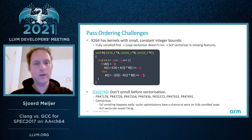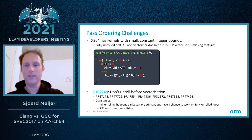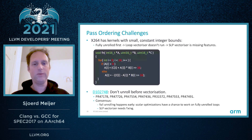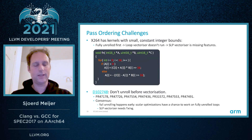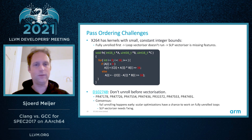Looking at pass ordering challenges: the code example here is typical for X264, which has many kernels — loops with small constant integer bounds, 16 in this case. The problem is that the full unroller comes along first and fully unrolls this loop, so the loop vectorizer doesn't get a chance to look at it. Since the SLP vectorizer is missing some features, we completely miss out on vectorization of these loops. I kicked off a discussion on not doing any unrolling before vectorization, and the consensus was that full unrolling should happen early to allow scalar optimizations to work, and that the SLP vectorizer needed fixing.